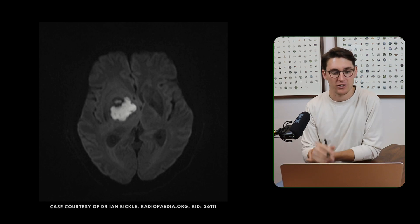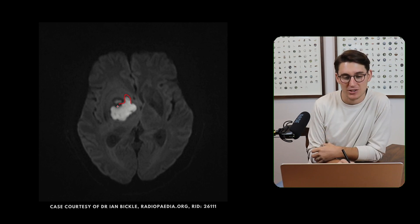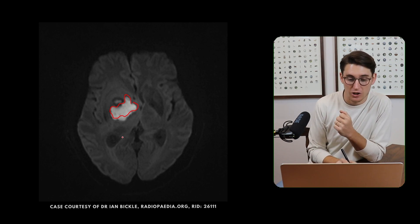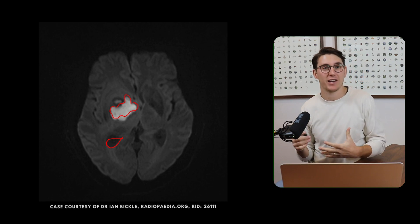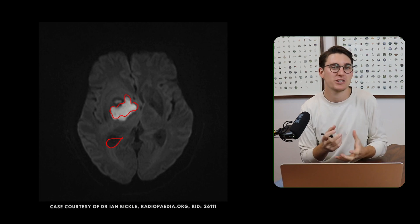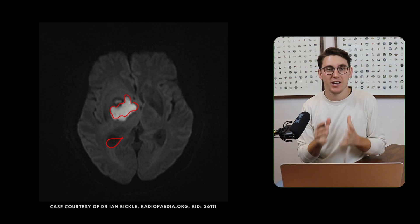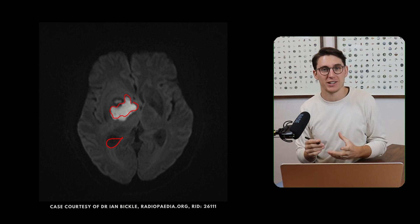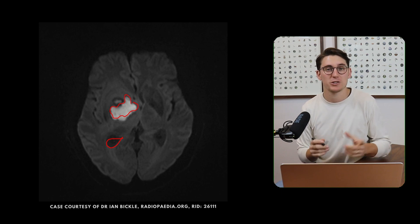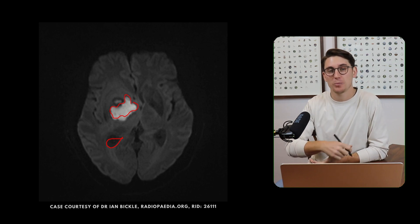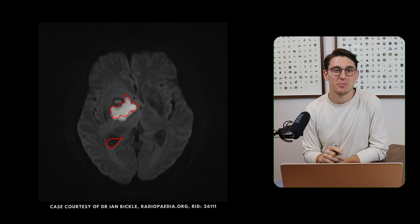Many people rote learn that a bright region on a DWI image represents restricted diffusion, and that a dark region like the CSF represents free diffusion. On ADC maps, people rote learn that dark means restricted diffusion and light means free diffusion. You'll be correct 95% of the time, but the problem with rote learning is that exceptions will catch you out. To be better radiologists and confident problem-solvers, we need to go one layer deeper into the underlying physics and mathematics. I'll keep it light.